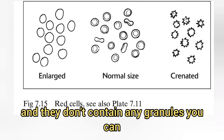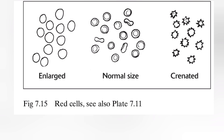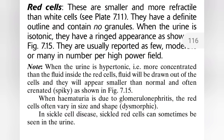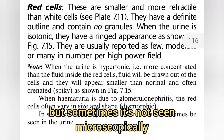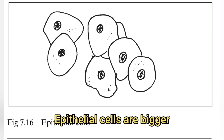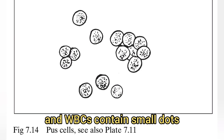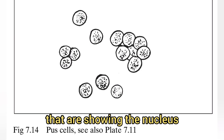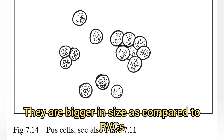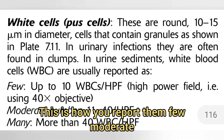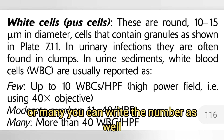You can easily recognize RBCs. Note that blood may be apparent macroscopically but sometimes not seen microscopically, so you have to be careful. Epithelial cells are bigger and contain a nucleus. WBCs contain small dots showing the nucleus, making them bigger in size compared to RBCs. You report them as few, moderate, or many — or by number — at high power field.